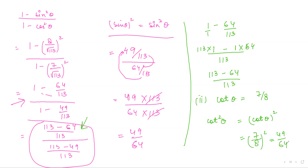The class is over for today. Question 8 — you can give it a try: 3 cot A equals 4, so cot A equals 4 by 3. Find all the other ratios — tan A, cos A, sine A — and then put values in both left-hand side and right-hand side to check they are equal. Question 9 also, you can try. Anyway, we will be doing it in the next class.